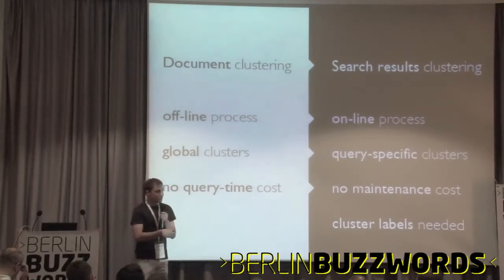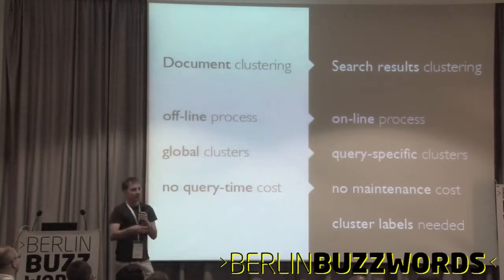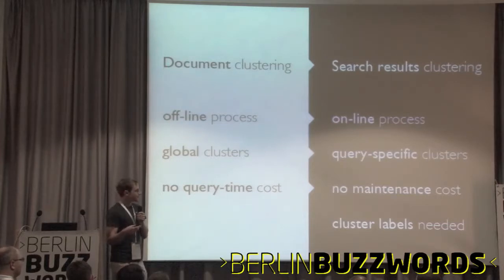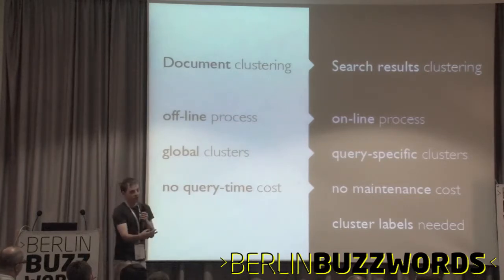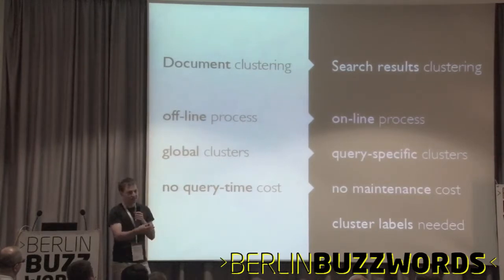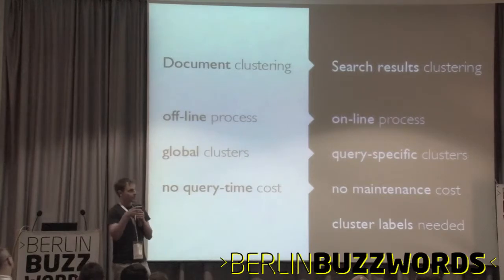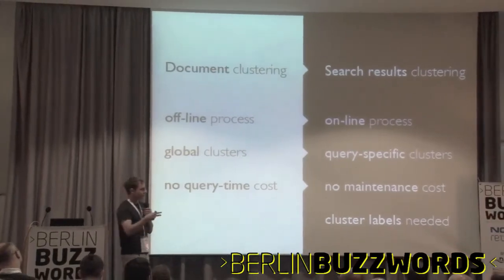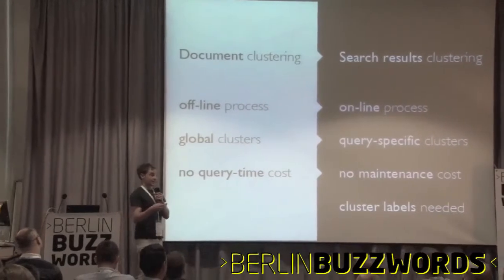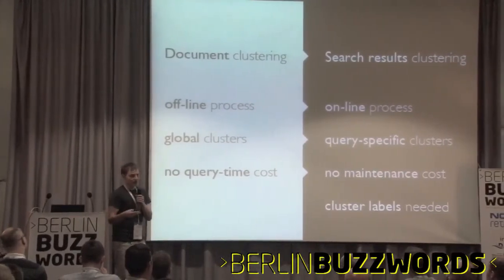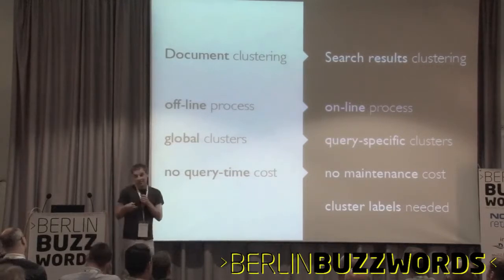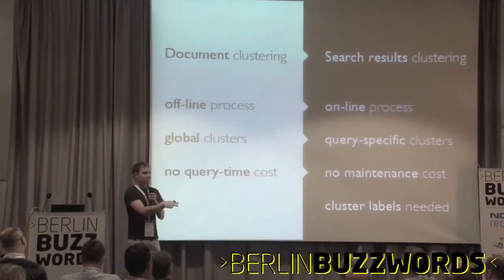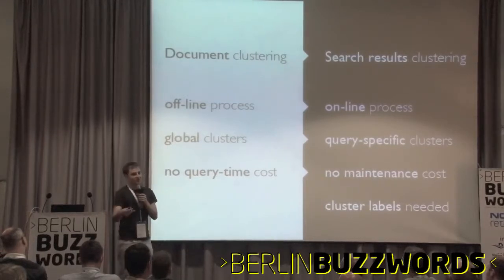In search results clustering, the clusters are dynamically generated based on user queries, so they can be specific to the query. If you do document clustering and use it at search time, there's no cost because the clustering was done before. In search results clustering there's a per-query cost, but the nice thing is that you don't get maintenance headaches — you don't have to worry about whether to stuff new documents into existing clusters, ignore them, or recluster everything.